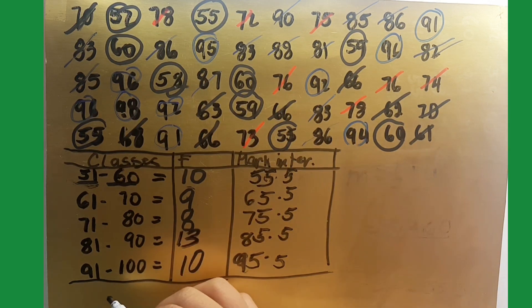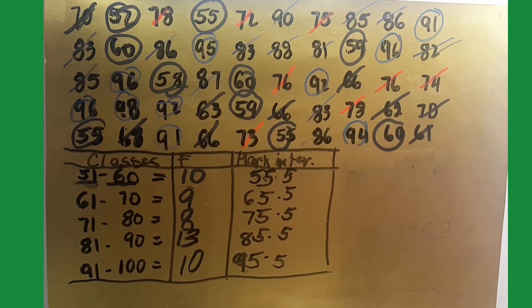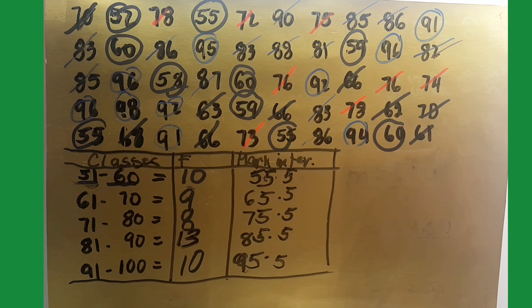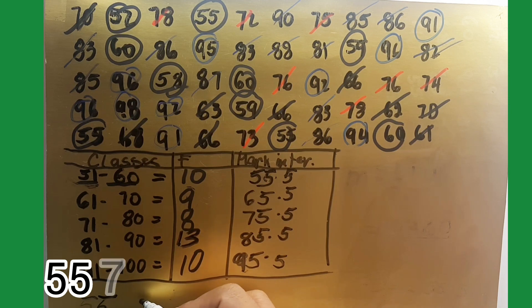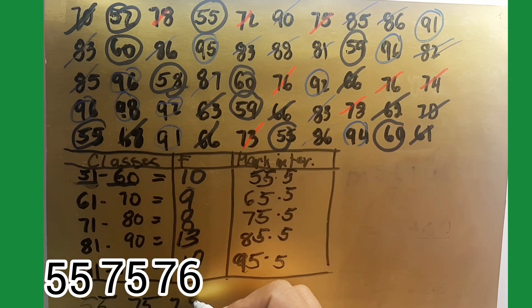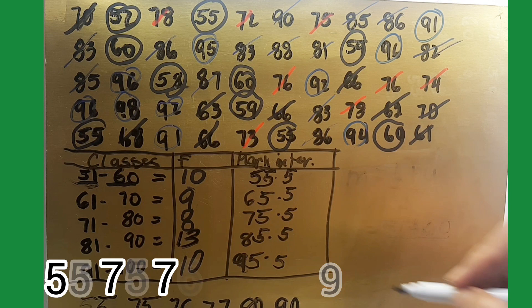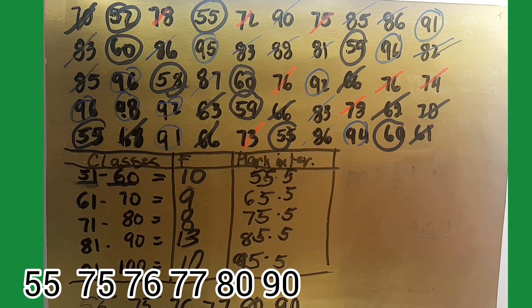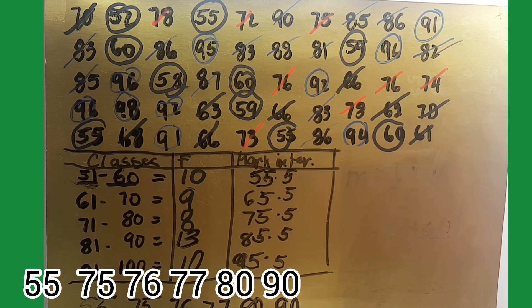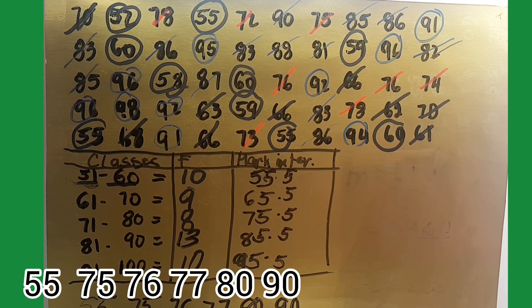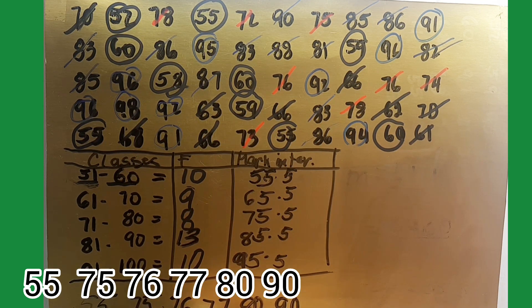Example of random numbers, how to find the mid intervals. So we have 55, 75, 76, 77, 80, and 90. As you observe, the numbers are arranged from lowest to highest. So how to get the mid intervals or median of these random numbers? First, you are going to count the numbers and find which is the mid interval. So the mid interval for this is this one.